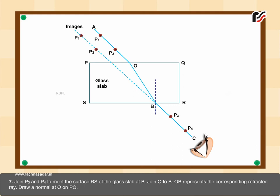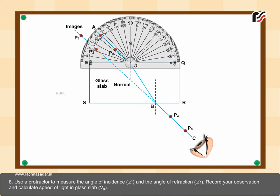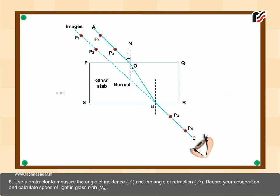Draw a normal at O on PQ. Use a protractor to measure the angle of incidence (angle i) and the angle of refraction (angle r). Record your observation and calculate speed of light in glass slab v_g. Repeat the procedure on other sheets of paper, taking incident rays at different angles of incidence and finding corresponding refracted rays. Record your observations and do calculations as follows.